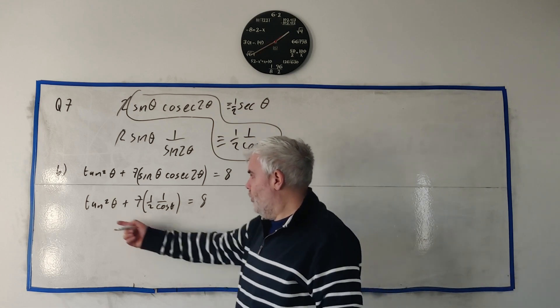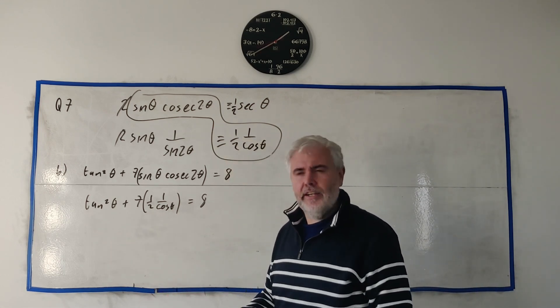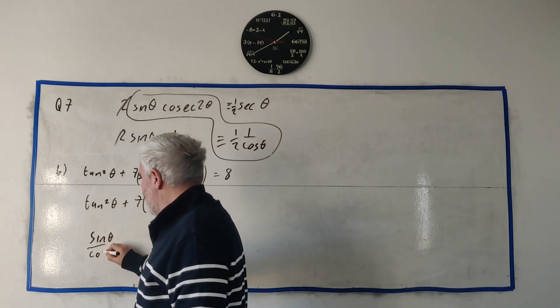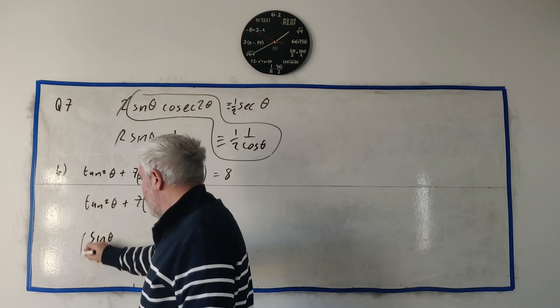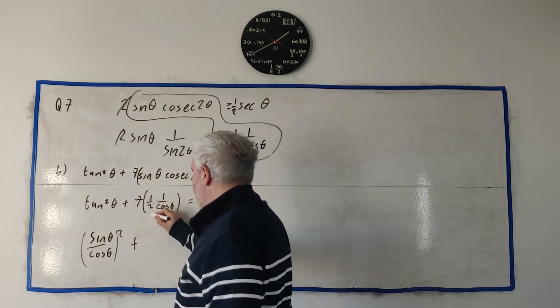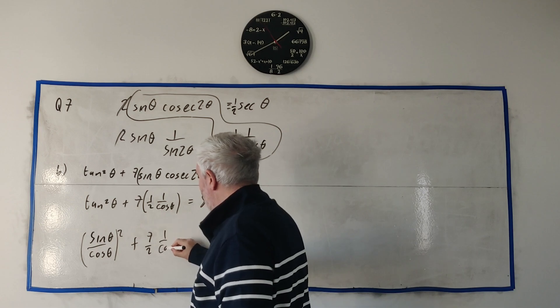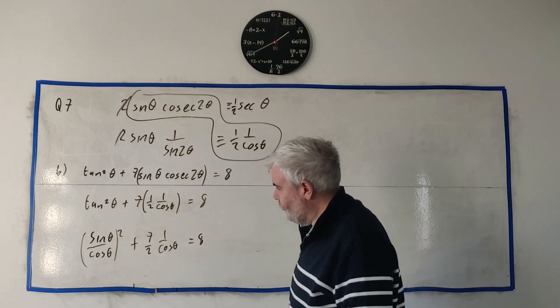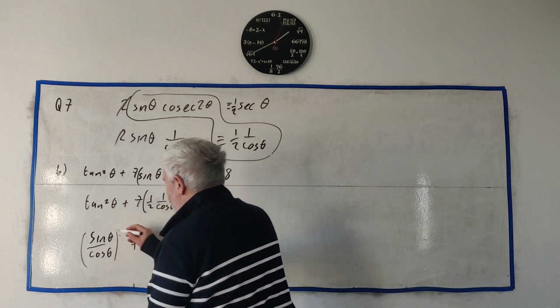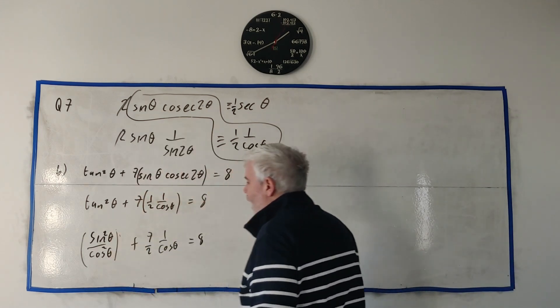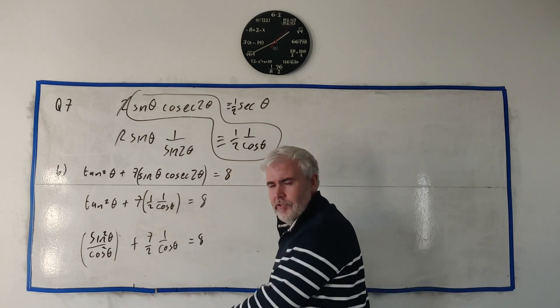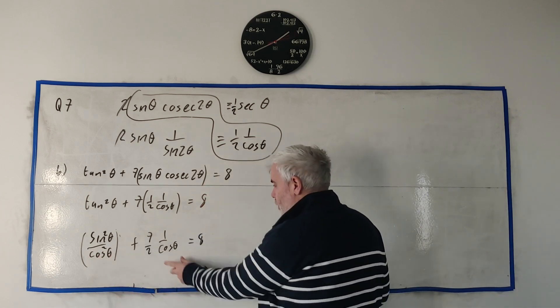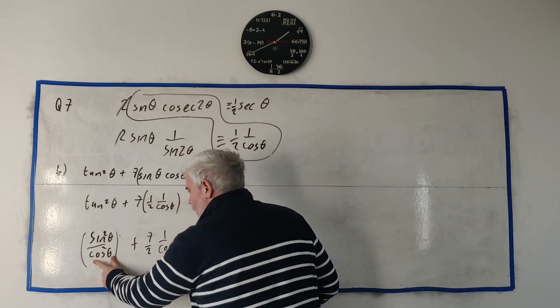I'm going to use the fact that sine θ cosec 2θ is equal 1 over cosine θ. So I'm just going to replace that, so this becomes tangent squared θ plus 7 multiplied by 1 over 2, 1 over cosine θ equals 8. Next thing I would do is replace tan. Tan can be turned into sine and cosine quite easily. That's just sine θ over cosine θ squared.